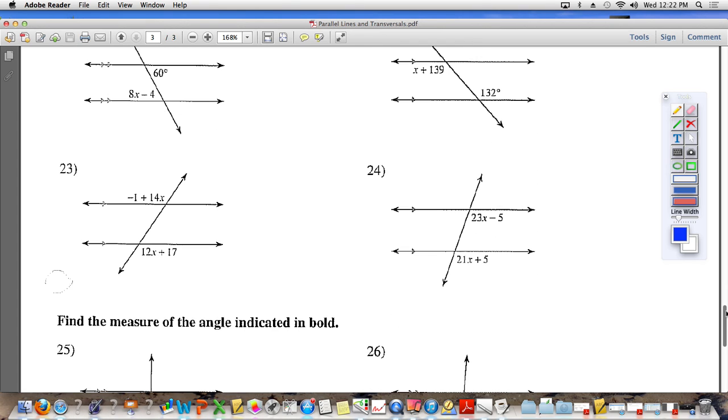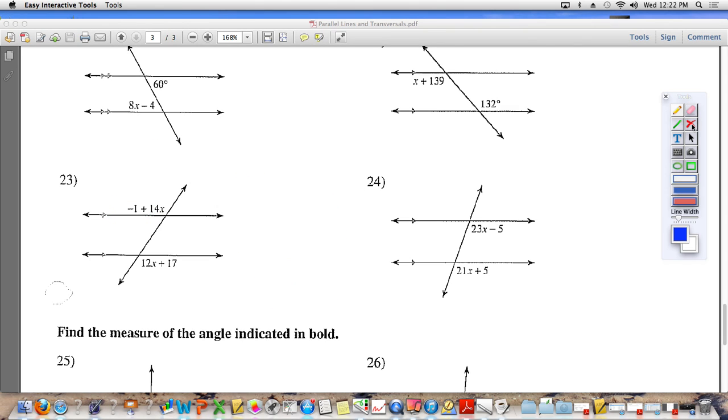Number 23 I want to talk to you about. Why am I talking to you about 23? It's a negative. Well, not only because it's a negative, but in all the problems above, you set the expression equal to a number. In this case, you have to set the expression equal to another expression. So you're going to have x's on both sides of the equal sign. So we have negative 1 plus 14x. Because these angles are alternate exterior angles, we know that they are equal to each other. So I have to say that negative 1 plus 14x is equal to 12x plus 17.